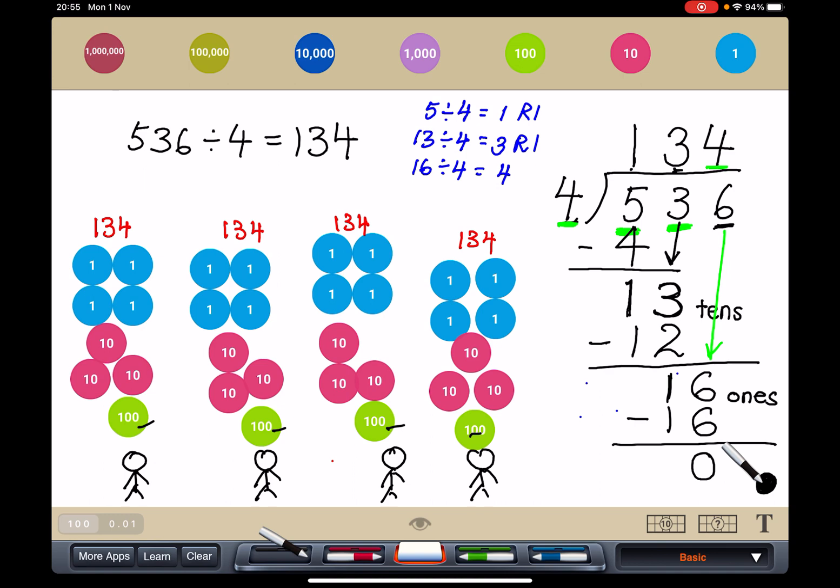Now, how do I check my answer? I'm going to take back all the sweets. Let me check. Now I have 1, 2, 3, 4 groups of 134.